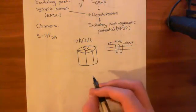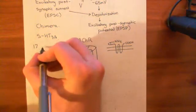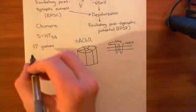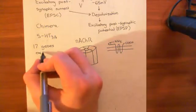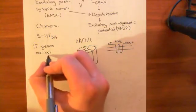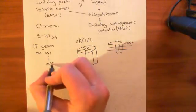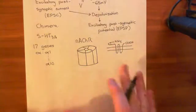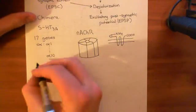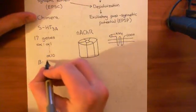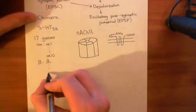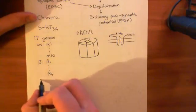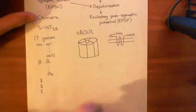There are absolutely loads of genes which code for the protein subunits of the nicotinic acetylcholine receptor pentamer — there are actually 17 genes. They are grouped into families: the alpha family, which has alpha-1 through alpha-10; the beta family, which contains four genes, beta-1 through beta-4; and then finally the gamma subunit, the delta subunit, and the epsilon subunit.